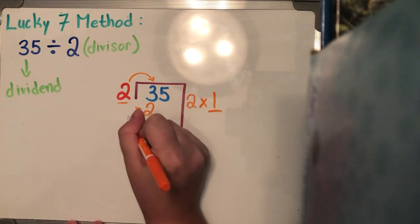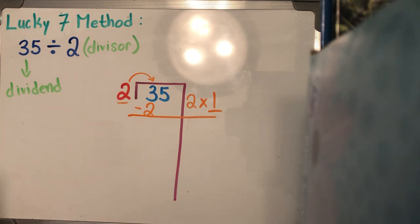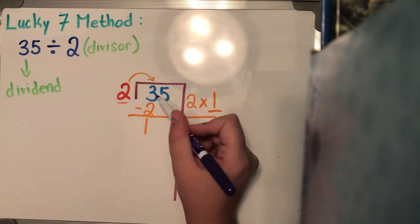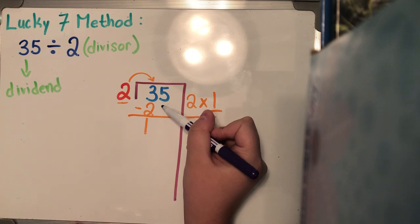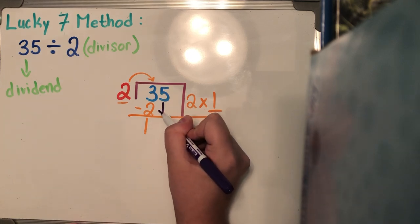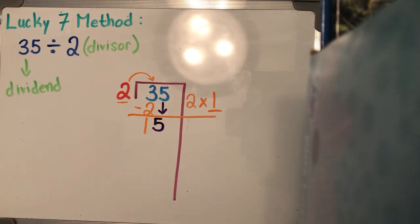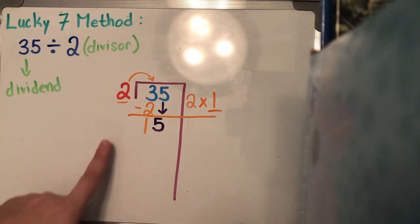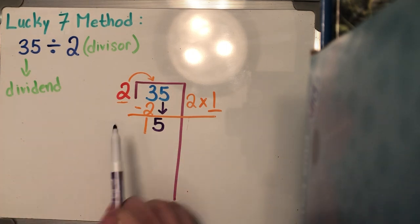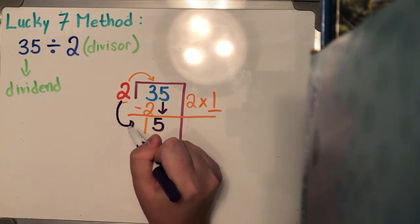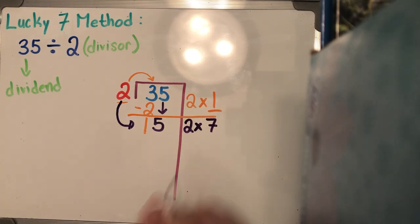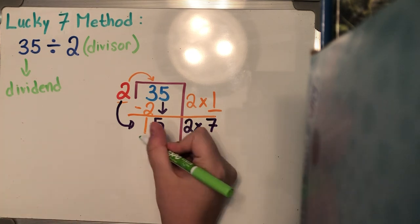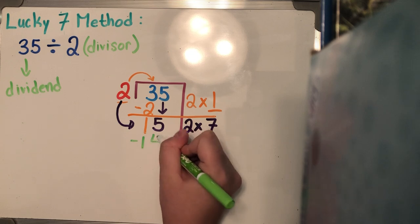I'm going to subtract two from three and I'm going to get one. Our next step is to bring down, because remember this two already talked to this three — now he wants to talk to the next number, which is five. Five is going to come down and join the party, placing himself right with that leftover one. So now this number is really no longer one, it's 15. We ask ourselves how many times can two go into 15 without going over? Two can go into 15 seven times because two times seven is 14.